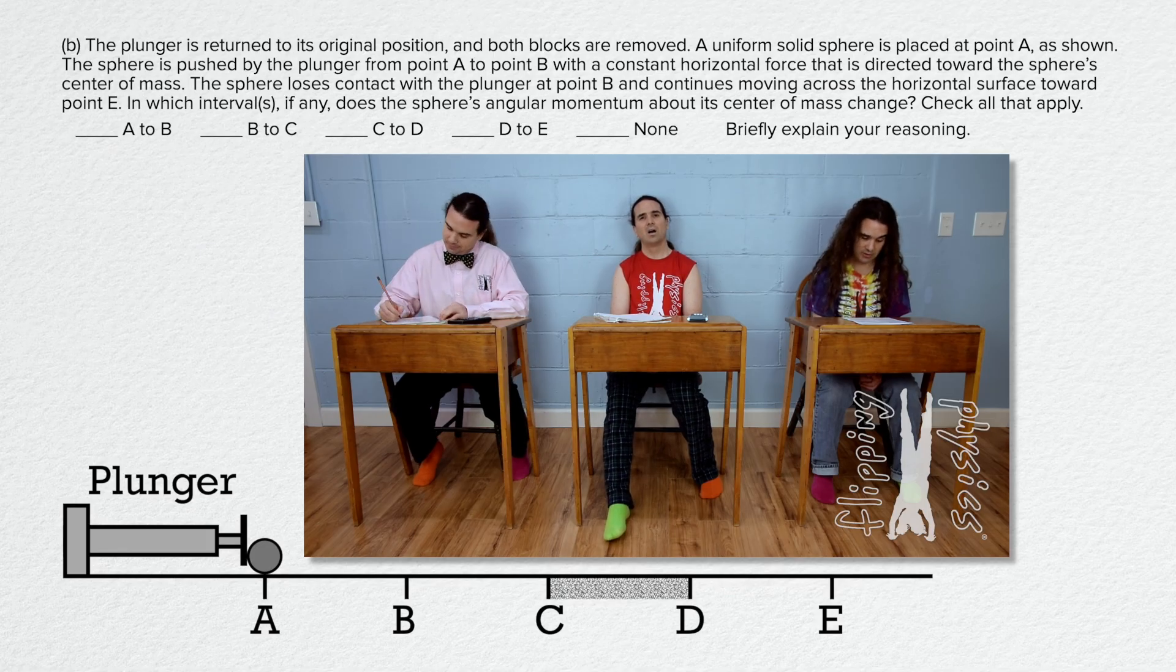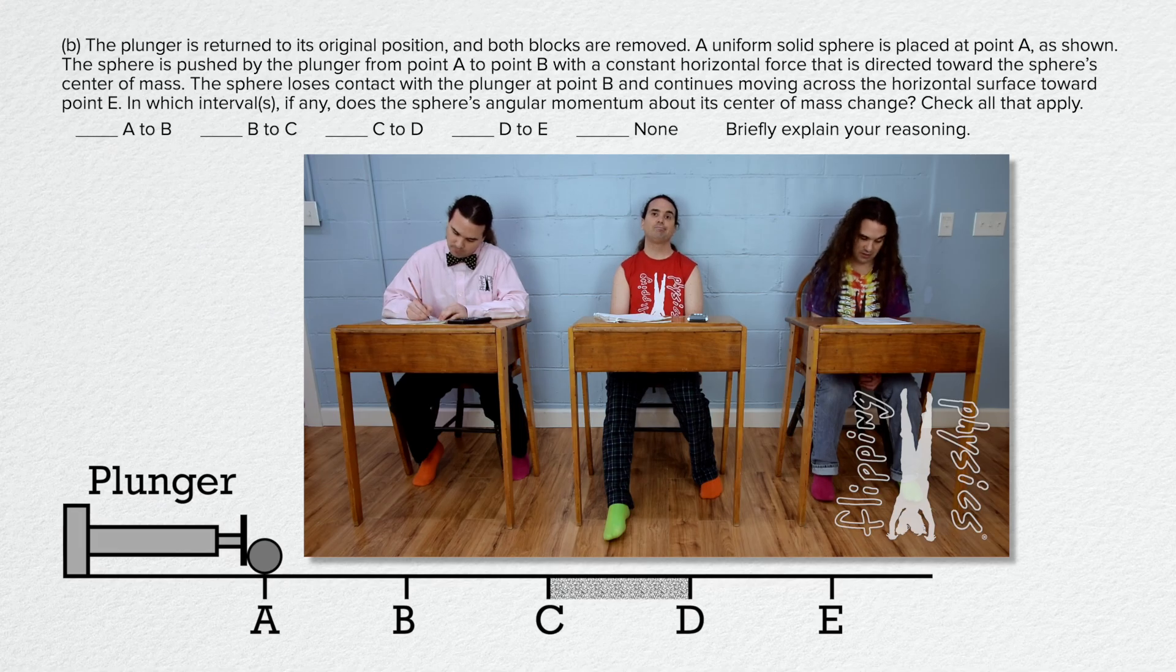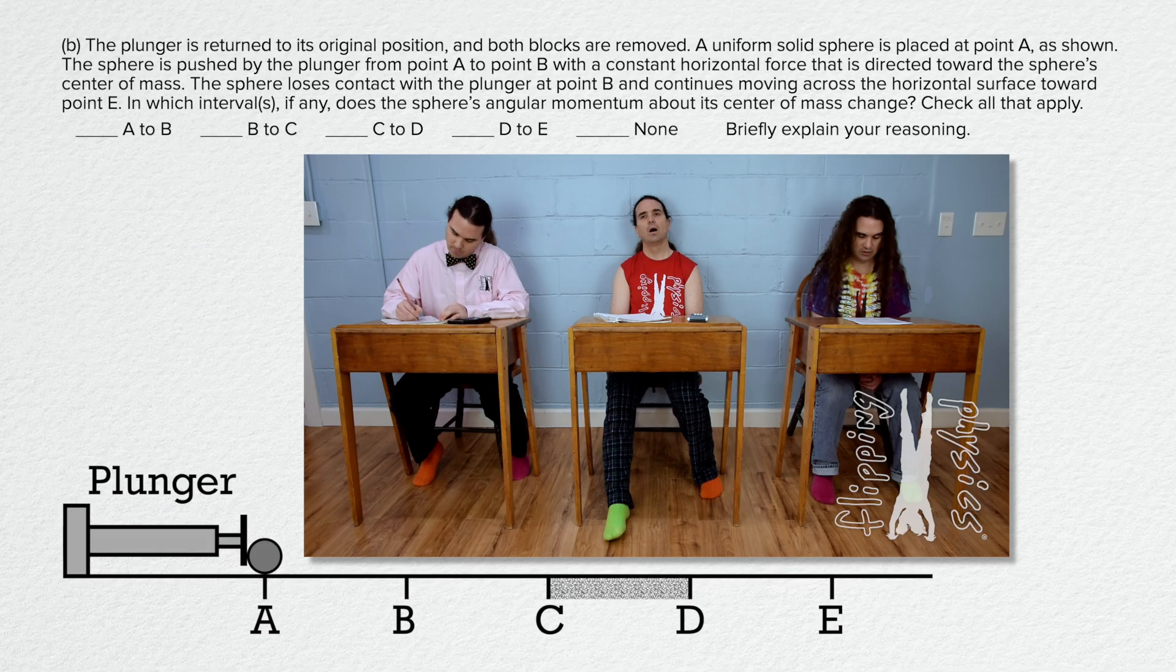The sphere loses contact with the plunger at point B and continues moving across the horizontal surface toward point E. In which interval or intervals, if any, does the sphere's angular momentum about its center of mass change? Check all that apply. A to B, B to C, C to D, D to E, and or none. Briefly explain your reasoning.